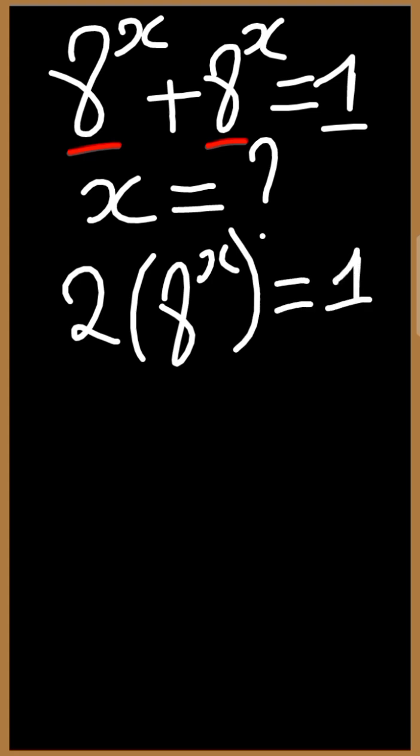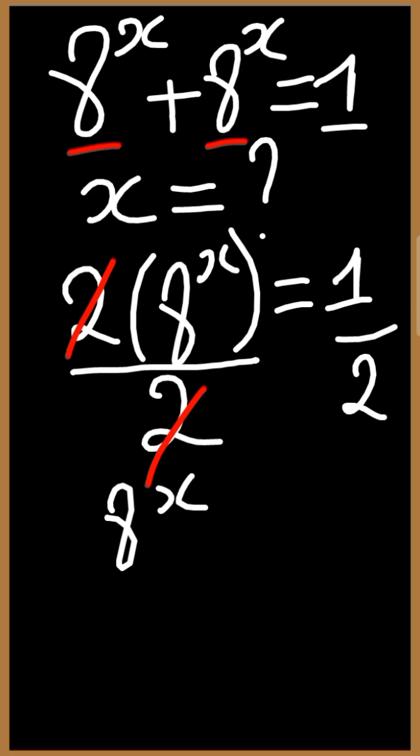The next step is we are going to divide both sides of the equation by 2. We divide the left hand side by 2, we divide the right hand side by 2. The twos will strike off. We will be left with 8 to the power x is equal to a half.